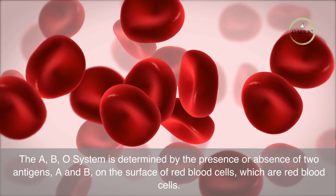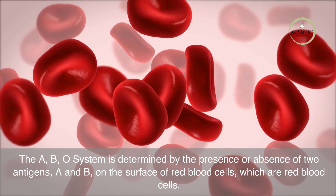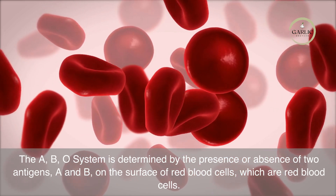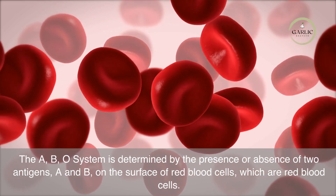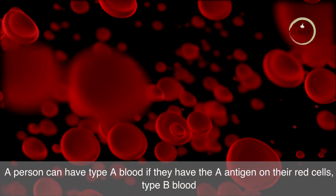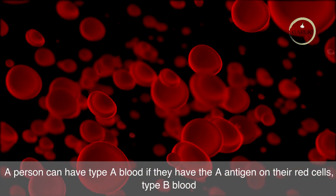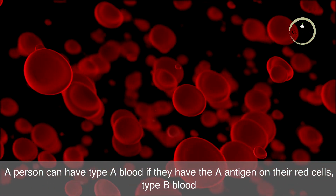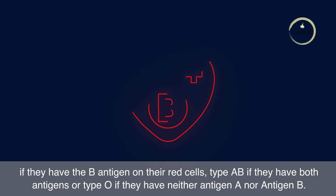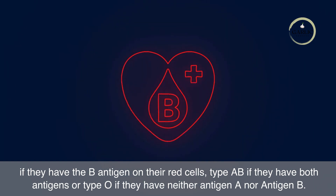The ABO system is determined by the presence or absence of two antigens, A and B, on the surface of red blood cells. A person can have type A blood if they have the A antigen on their red cells, type B if they have the B antigen, type AB if they have both antigens, or type O if they have neither antigen A nor antigen B.